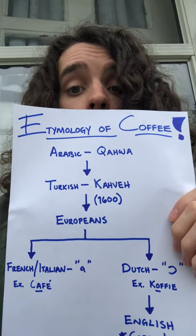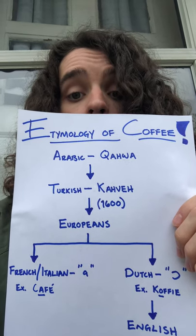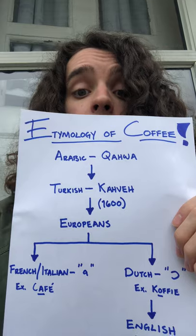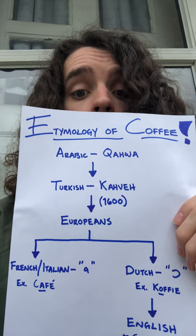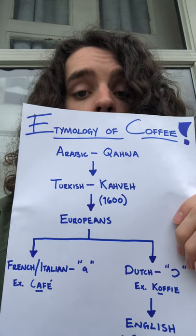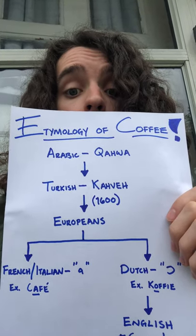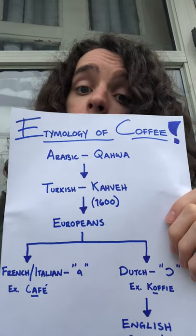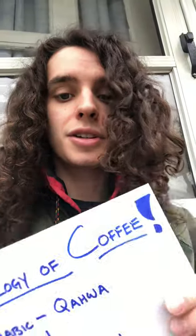So it originated from the Arabic word. Now, the Turkish had a different pronunciation of it, which is 'kahve,' and this, as we can see based on me pronouncing that, is sort of more similar to how we pronounce it today. Let me try to adjust this paper — maybe I'll try to hold it from the top. Not a good idea, as it turns out. Let's just go back to this.